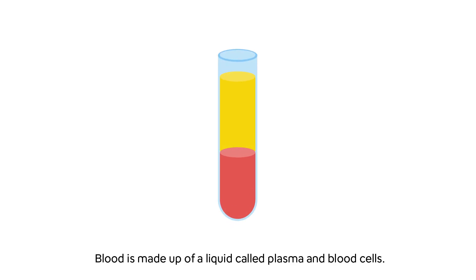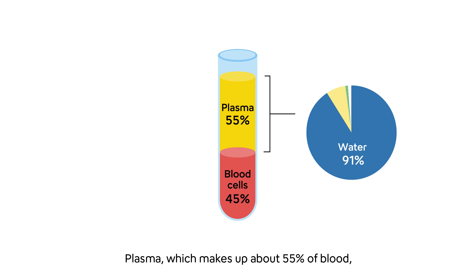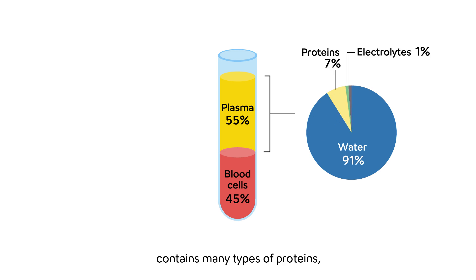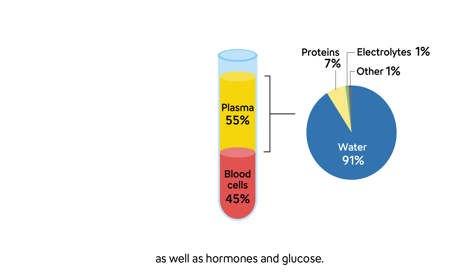Blood is made up of a liquid called plasma and blood cells. Plasma, which makes up about 55 percent of blood, contains many types of proteins, including those that stop bleeding and protect against infections, as well as hormones and glucose.